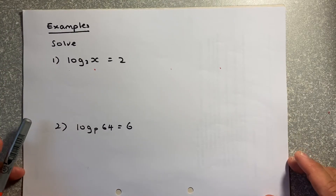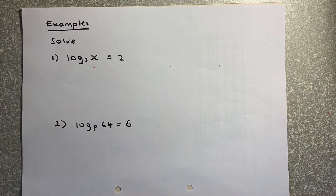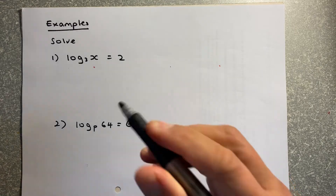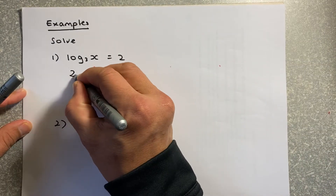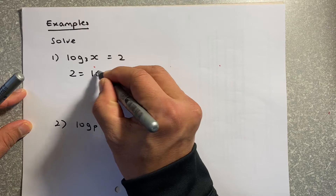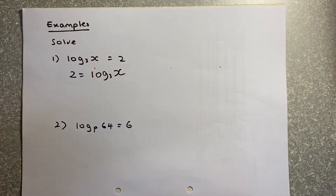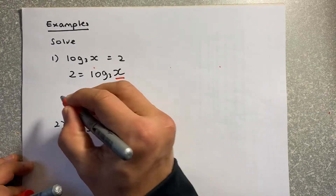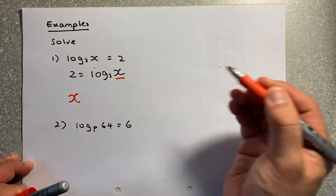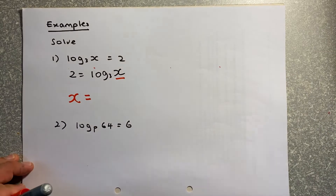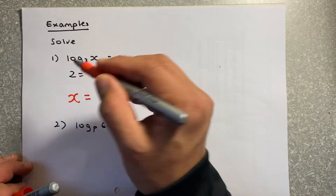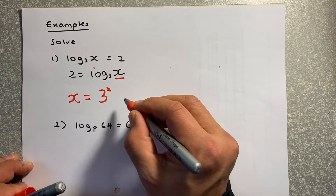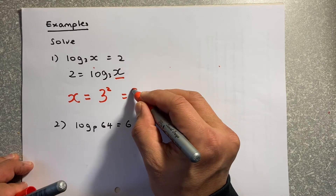The first example: solve log base 3 of X equals 2. The first thing you do is put the single number in front. So we change it to: 2 equals log base 3 of X. Now remember, the last number becomes your first number. So X, changed to index form, equals 3 squared, and the answer is 9.